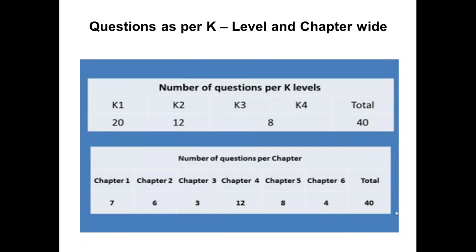Chapter-wise question distribution across the 40 questions: Chapter one gets 7 questions, Chapter two gets 6, Chapter three gets 3, Chapter four gets 12, Chapter five gets 8, and Chapter six gets 4 questions - totaling 40.